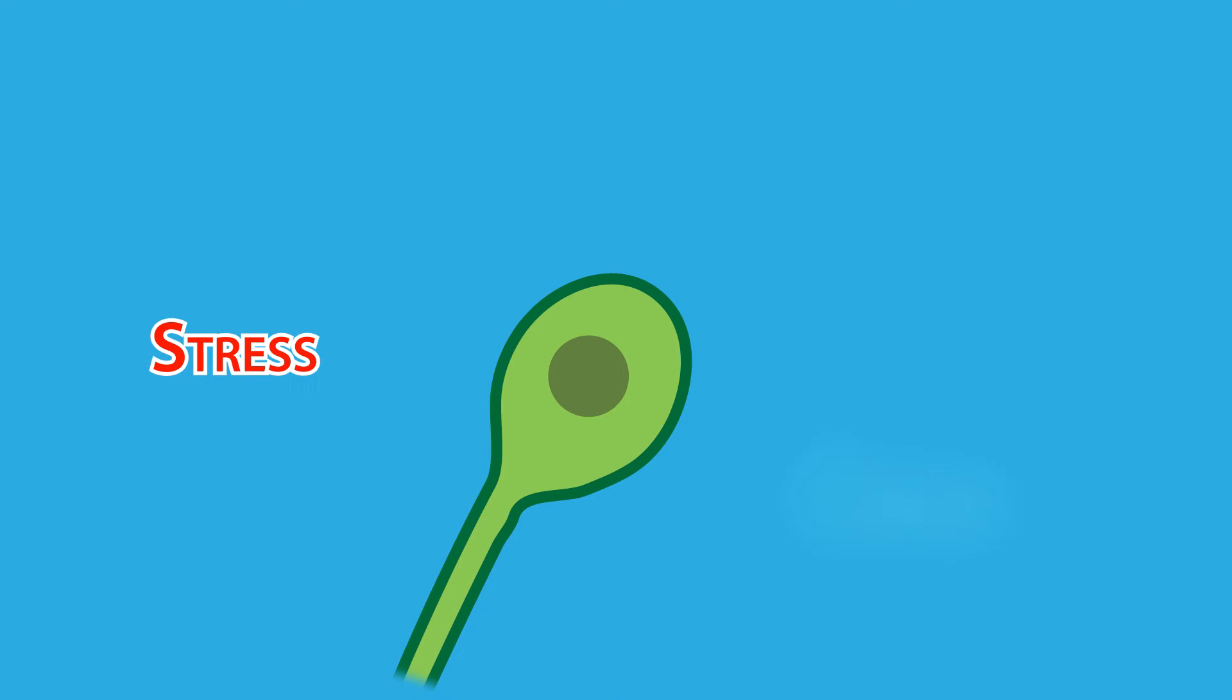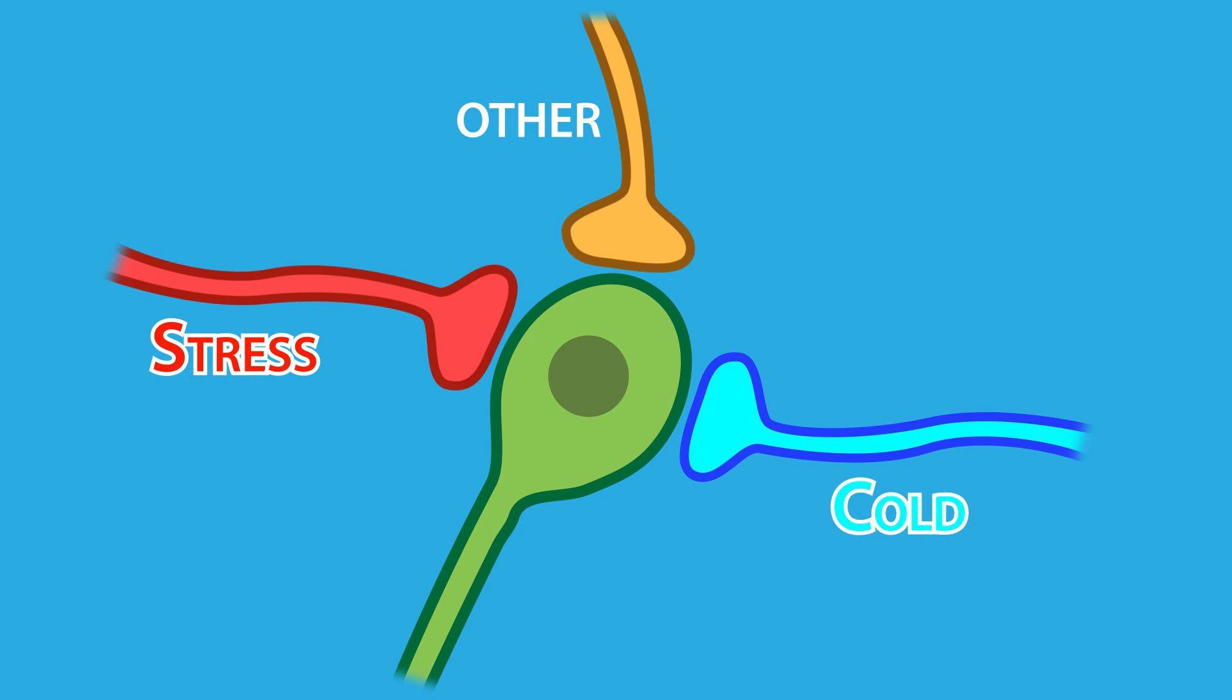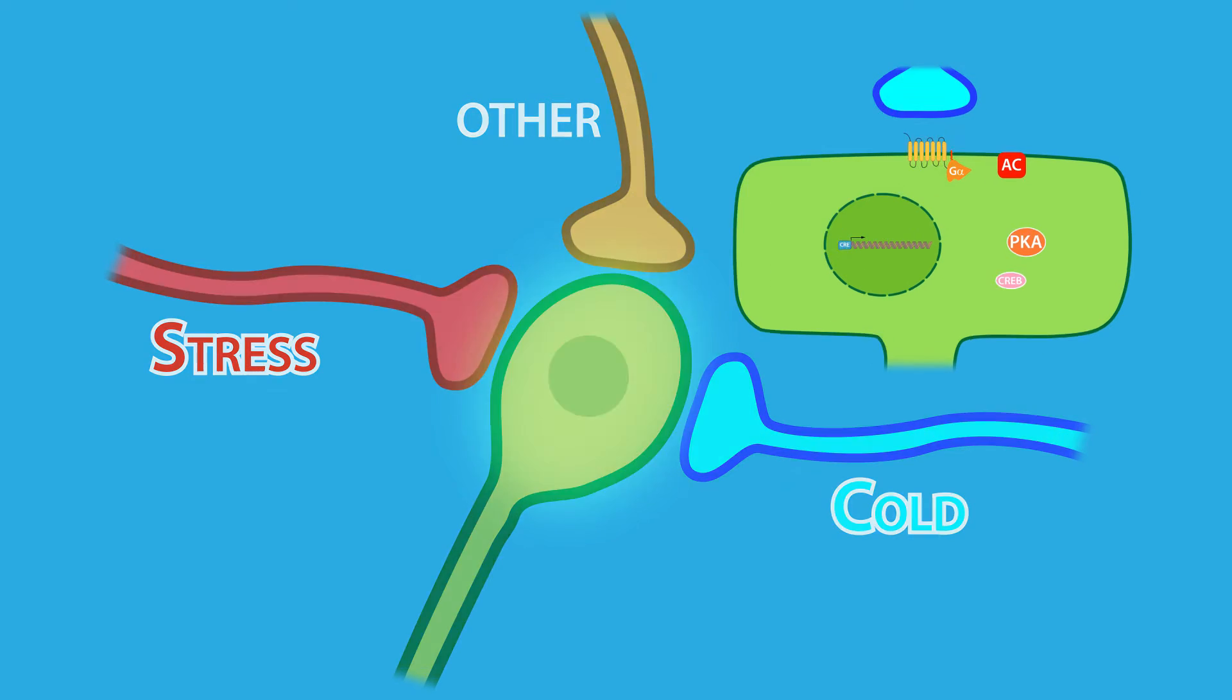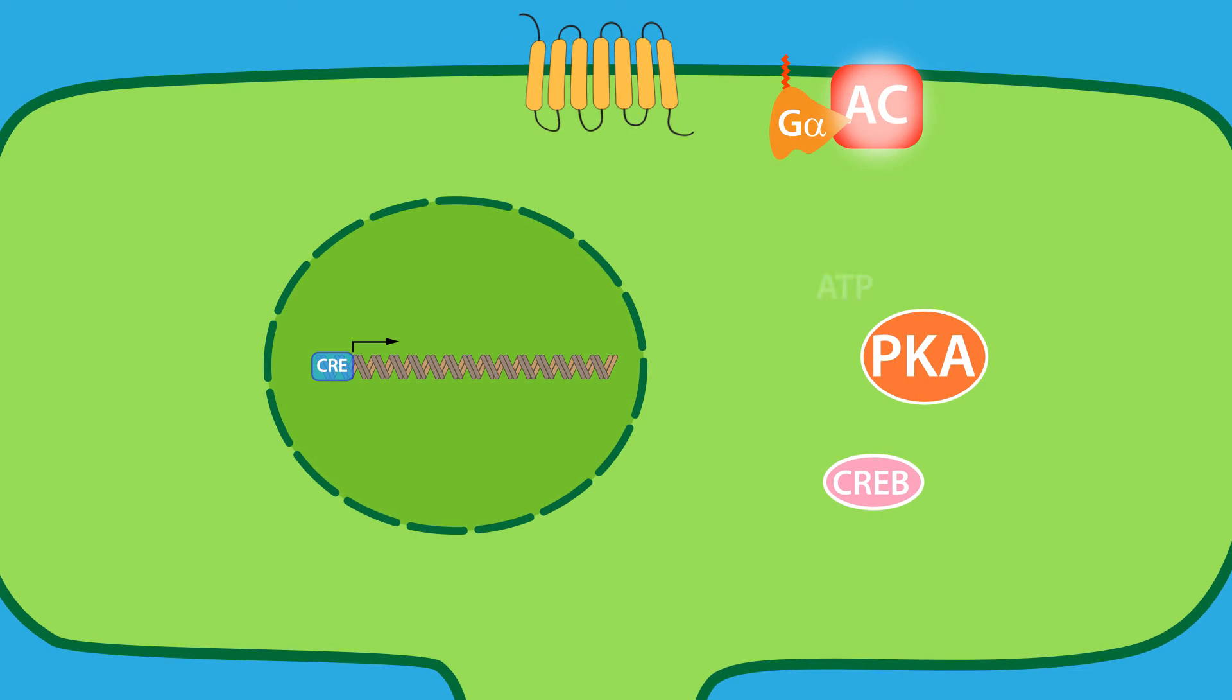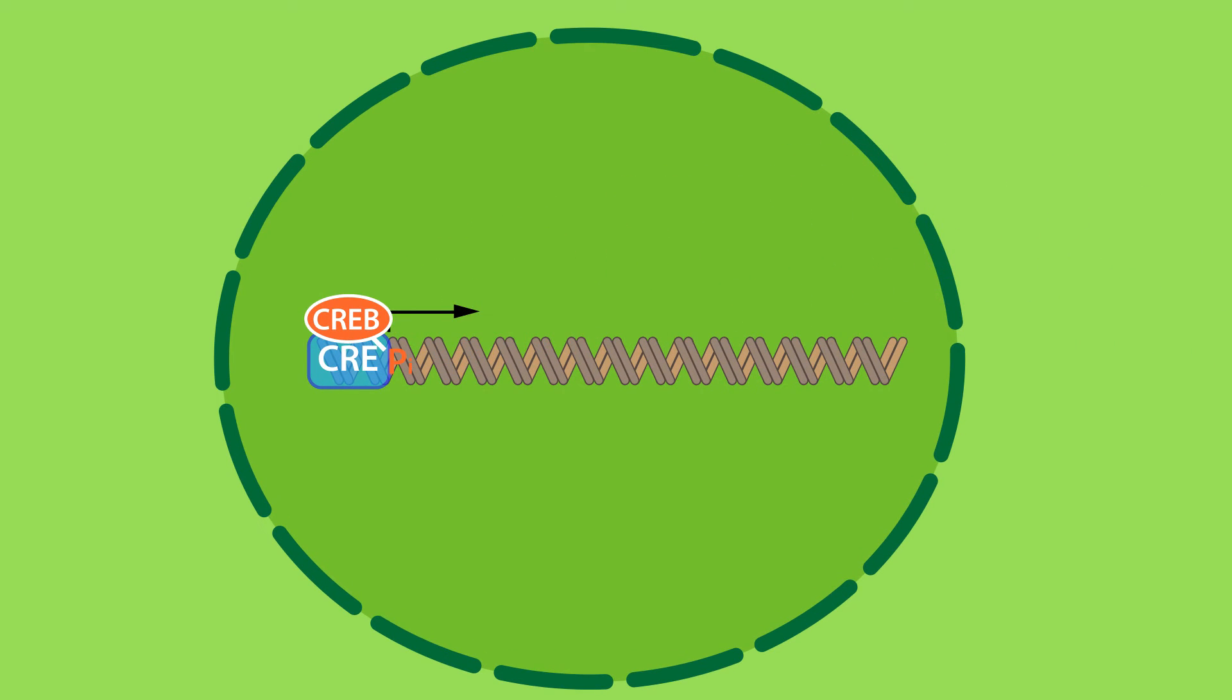Whether it's stress, cold, or other factors that stimulate the synthesis and release of TRH, they do this by activating neurons that form synapses on TRH-synthesizing neurons, which release neurotransmitters that in turn activate G-protein-coupled receptors. Activation of these receptors leads to an increase in intracellular cyclic AMP, which leads to the activation of downstream effectors that stimulate the transcription of the TRH gene and enzymes that modify the pre-pro-TRH peptide.